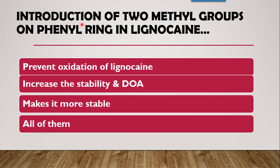Next question: why are two methyl groups introduced on the phenyl ring in lignocaine? First, to prevent degradation of the NHCO amide group. Second, to increase its stability as well as duration of action. Lignocaine is more stable compared to procaine since it is not hydrolyzed or degraded by any enzyme. The methyls prevent oxidation, enzymatic degradation, and increase stability and duration of action. So the correct answer is all of them.